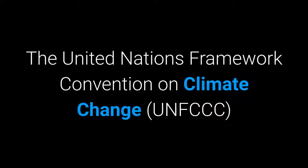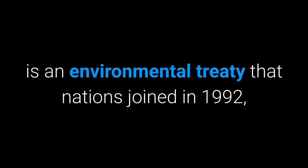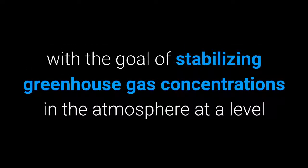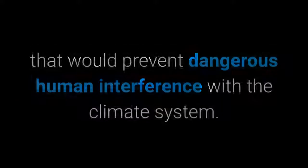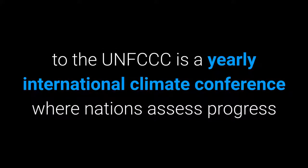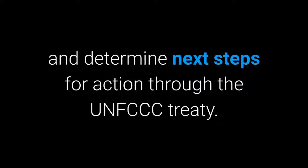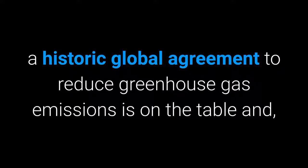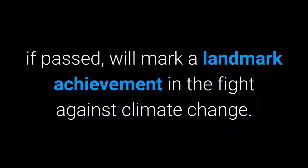10. COP and UNFCCC. These two abbreviations are best described together as they work hand-in-hand. The United Nations Framework Convention on Climate Change is an environmental treaty that nations joined in 1992, with the goal of stabilizing greenhouse gas concentrations in the atmosphere at a level that would prevent dangerous human interference with the climate system. The Conference of the Parties to the UNFCCC is a yearly international climate conference where nations assess progress and determine next steps through the UNFCCC Treaty. This year marks the 21st Conference of the Parties, held in Paris beginning November 30, where a historic global agreement to reduce greenhouse gas emissions is on the table.